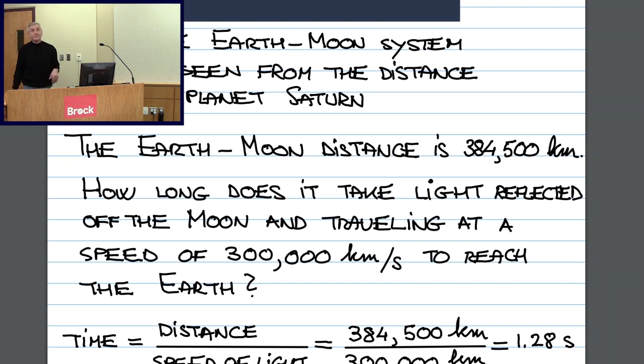So when you look at the Moon, you don't see how it is right now, and now is as given by your clock. You see how it looked 1.28 seconds ago, because it took that time for light to travel from the surface of the Moon to the Earth. And we'll find out that the greater the distance, the longer is this look-back time.